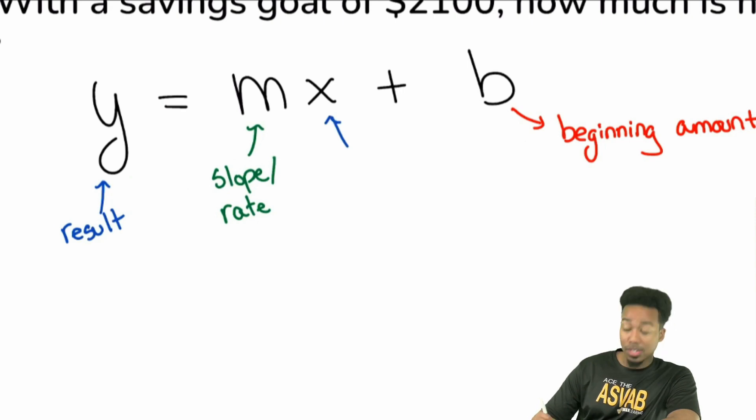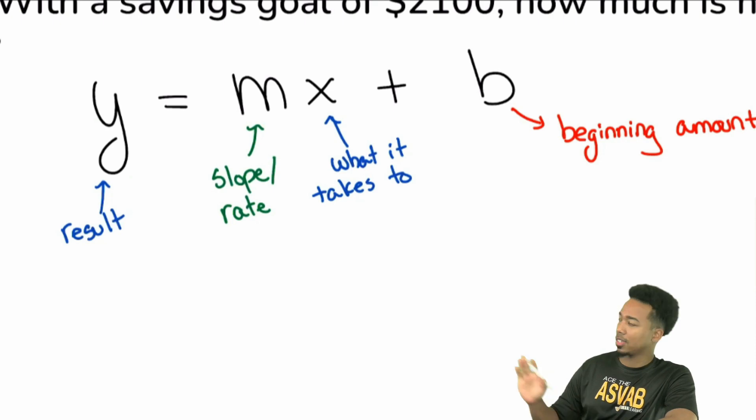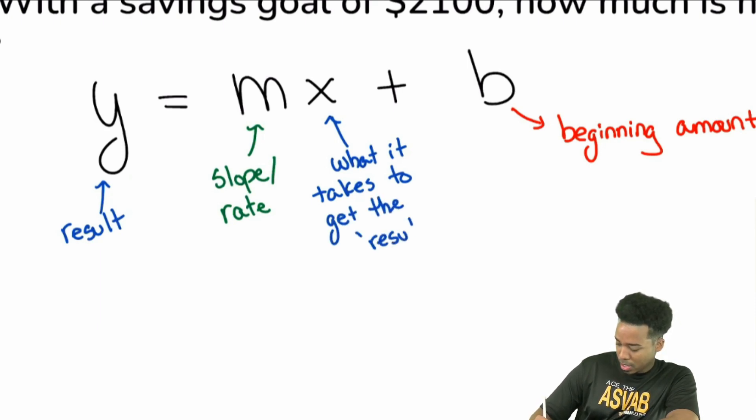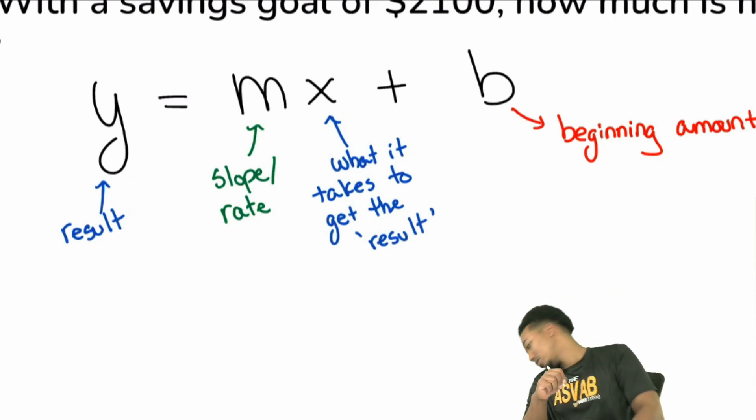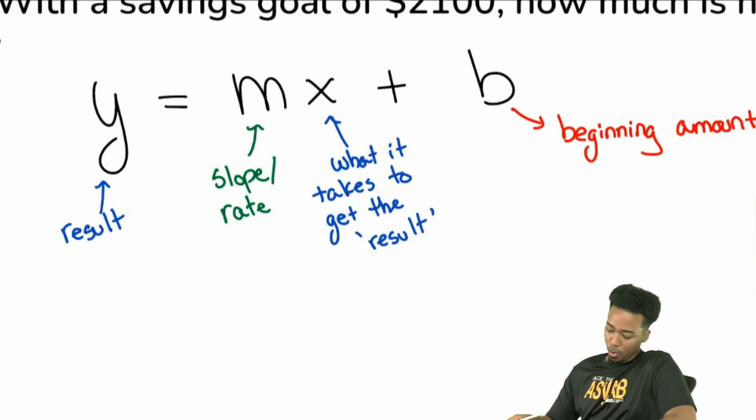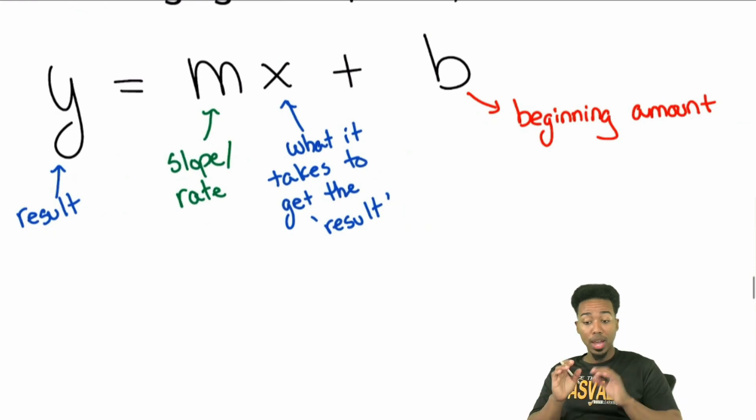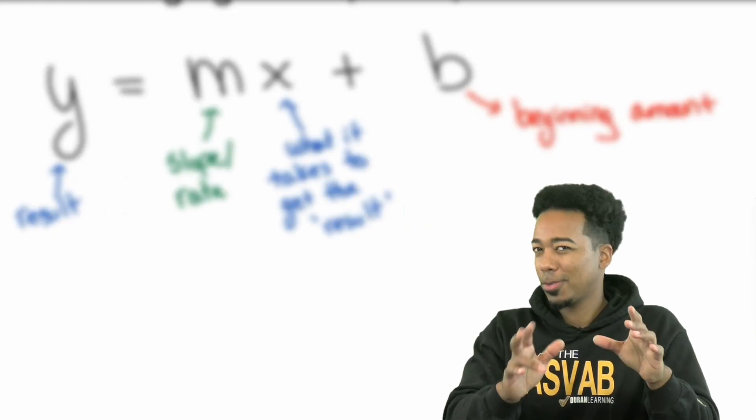And x is how long it took to get that result. So what it takes. And I'm just writing this in plain old English. This isn't the formal way to write it, but it's going to be in English. So what it takes to get the results. And if you hear coughing, that is my dog. He's good. Cool. So there it is. Write that down. Let's pause really quick.